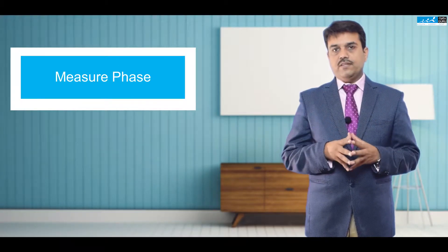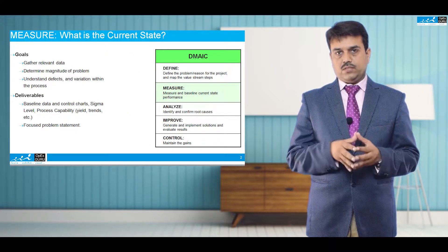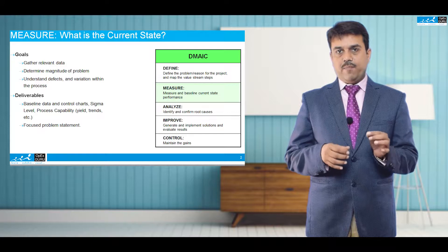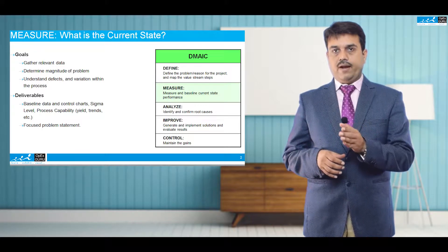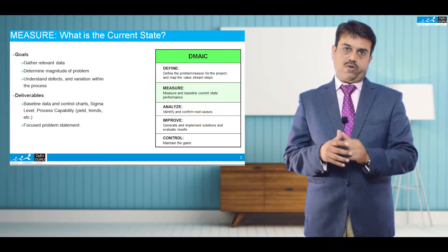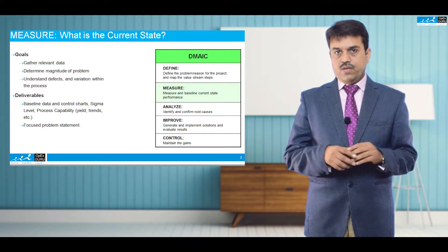We have already completed the Define phase. In Six Sigma, as you already know, we follow a five-phase methodology called DMAIC: Define, Measure, Analyze, Improve, and Control. We are now into the Measure phase.